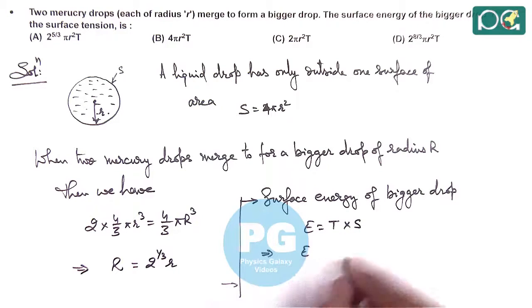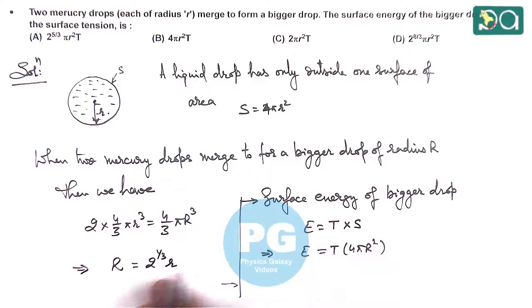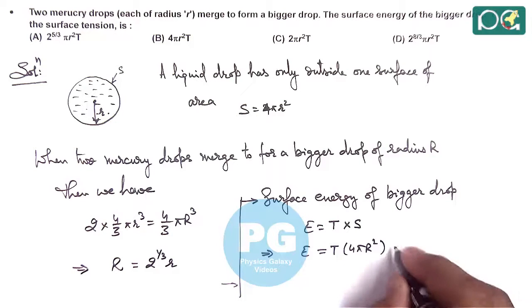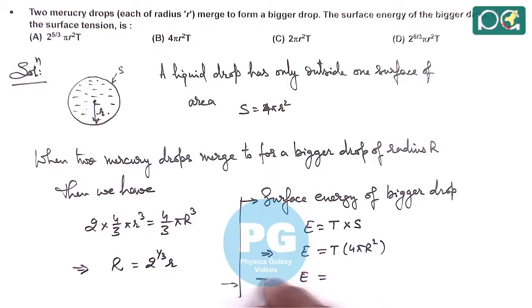So here this gives us T × 4πR². Because the bigger drop has a radius R, its surface area is 4πR². So we can substitute the value. This comes 4πT × 2^(1/3)r².